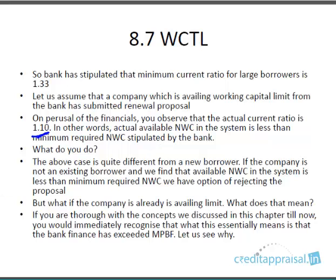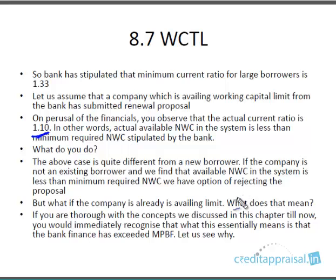This is a totally different case compared to a new borrower. If a new borrower comes to you and you find that the NWC is not as per the minimum required NWC, you can simply reject the proposal — say the financials are not good and decline. But what if the company is an existing customer already availing the limit? What do you do?